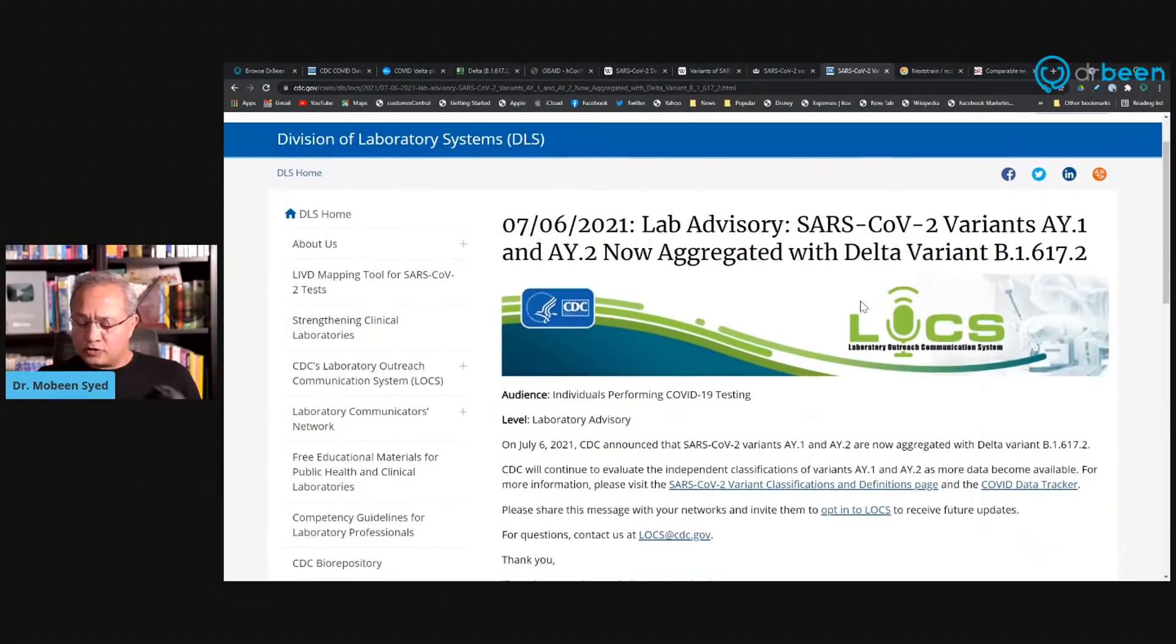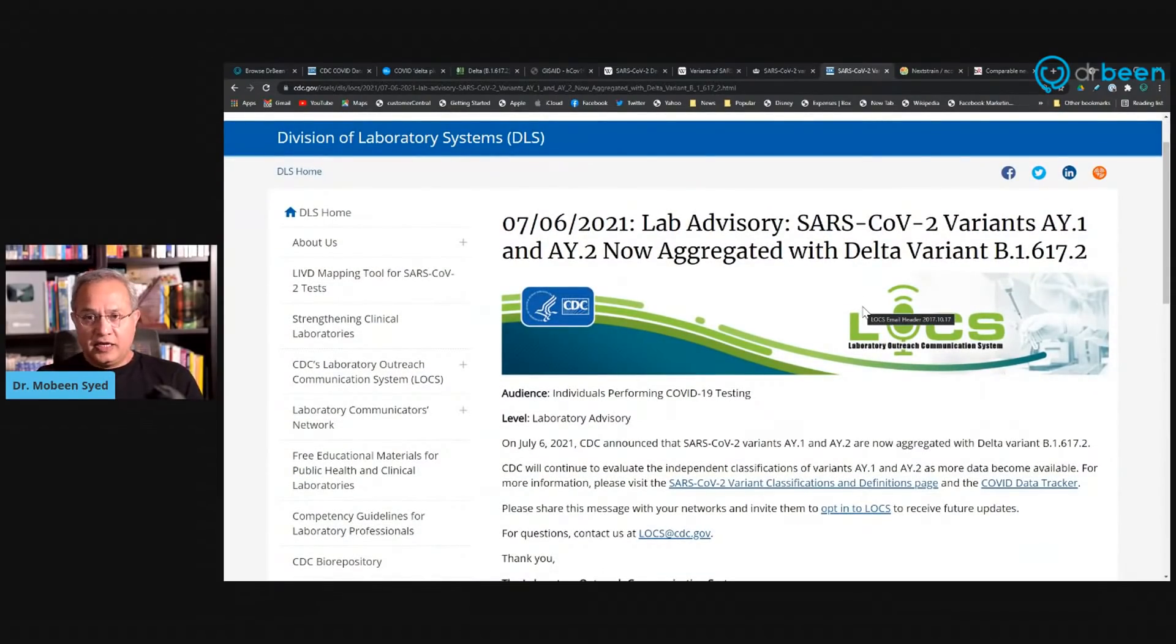Here is an important one, which I think is interesting. Delta Plus is actually a set of other variants that have been rolled under Delta. So if you see here on 7-6, CDC is saying SARS-CoV-2 variants named AY1 and AY2 now aggregated with Delta variant. So they were not really the Delta's variation, but there is so much similarity that they are rolled under Delta.